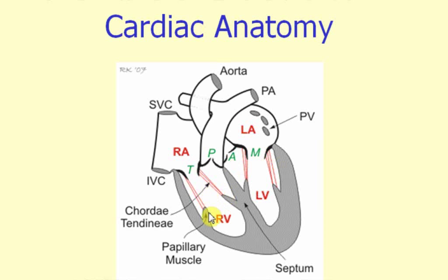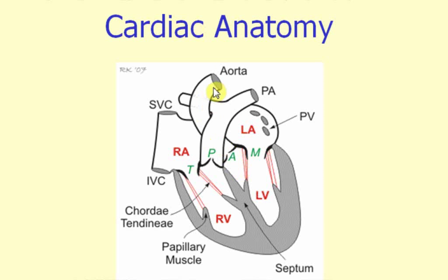The right ventricle is separated from the pulmonary artery by a pulmonic valve, and this is the artery that then takes the blood from the right ventricle and distributes it to the lungs where it is oxygenated. And from the left ventricle, we have the aortic valve that is separating the left ventricle from the aorta, and it is the aorta that distributes the blood throughout the systemic circulation.